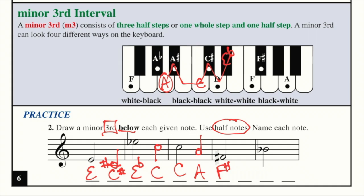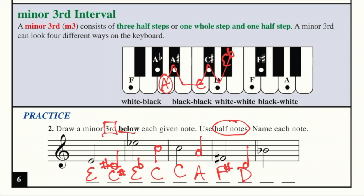Next example, F sharp. Ignore the sharp and count down 3 from F. F, E, D. Let's use the keyboard. Again, we're going to erase part of the keyboard. Starting on F sharp, we're going to go a whole step. Then a half step. And that is D sharp.